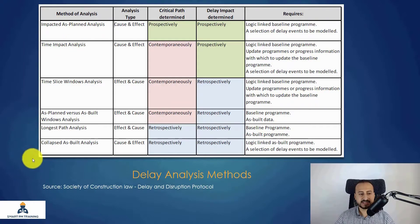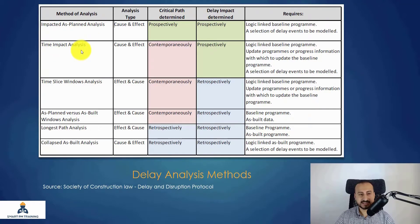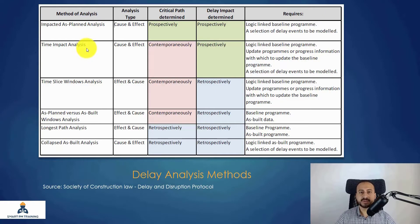The most reliable three methods are Impacted As-Planned analysis, Time Impact Analysis, and Collapse As-Built. The others are not really used and have some serious weaknesses. We will provide a comparison between Impacted As-Planned and Time Impact Analysis, but what we will be using in this course is the Time Impact Analysis, because we will see later why it is the strongest method with many advantages.